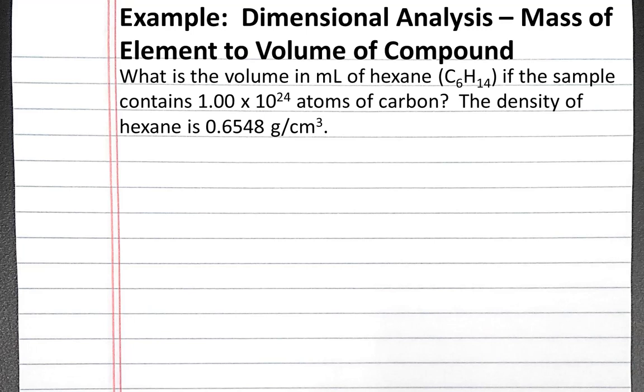We can start our dimensional analysis with the number of atoms of carbon given in the problem. Our first step will be to convert from atoms of carbon to moles of carbon using Avogadro's number. One mole of carbon equals 6.022 × 10²³ atoms of carbon.